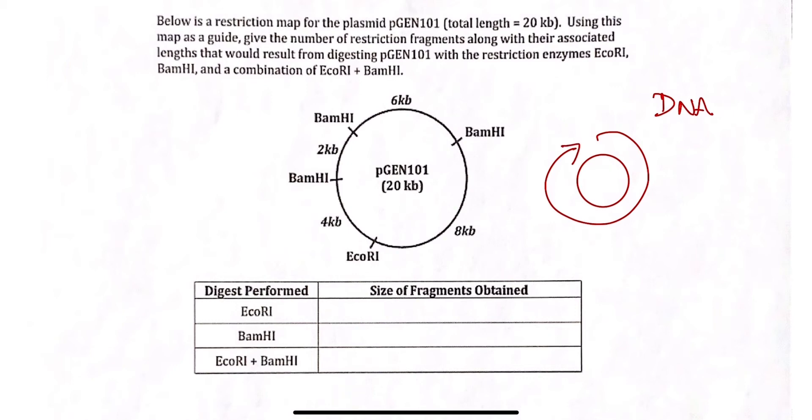Now, in the case of using a map as a guide, we're asking you in this example to follow along and give the number of restriction fragments along with their associated lengths that would result from digesting this plasmid with the restriction enzymes EcoR1, BamHI, and also a combination of EcoR1 and BamHI.